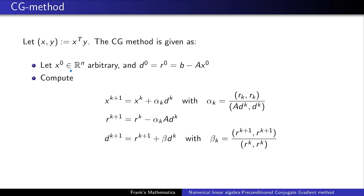We start with an arbitrarily chosen vector x₀ in ℝⁿ and compute the following terms — that's just the most common notation of the conjugate gradient method. And the question is now, how are we going to improve this method?